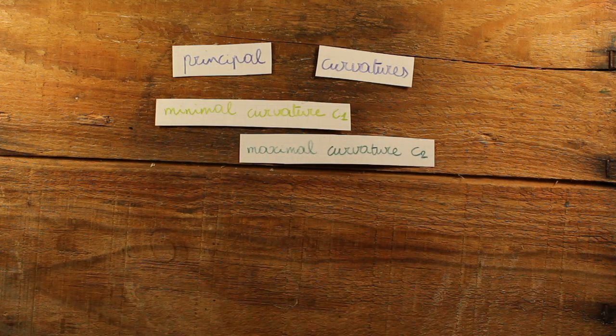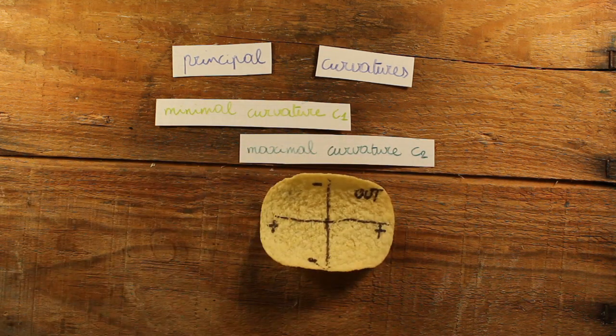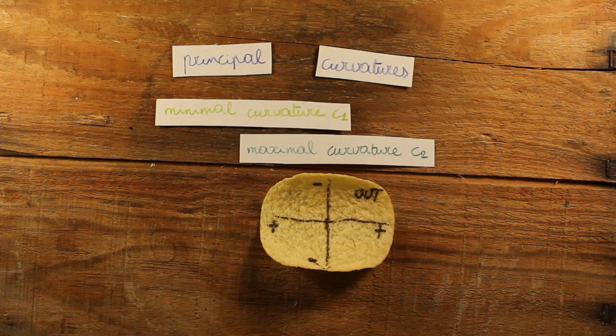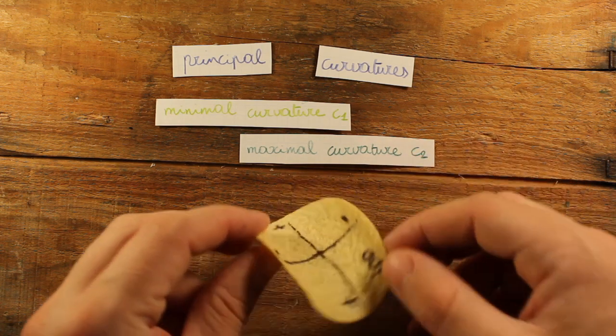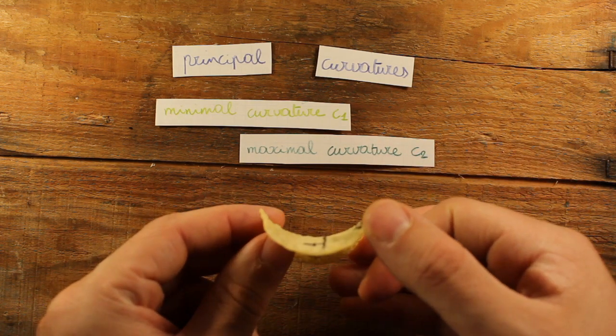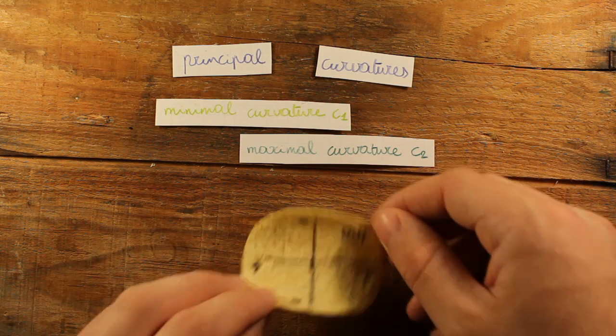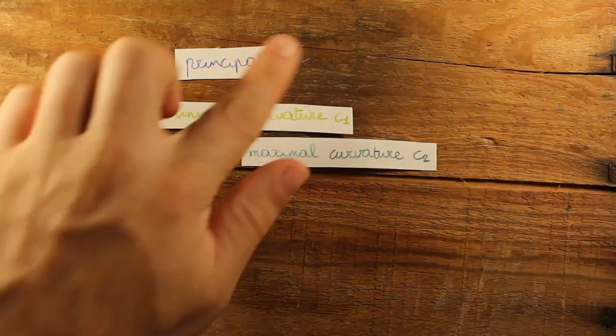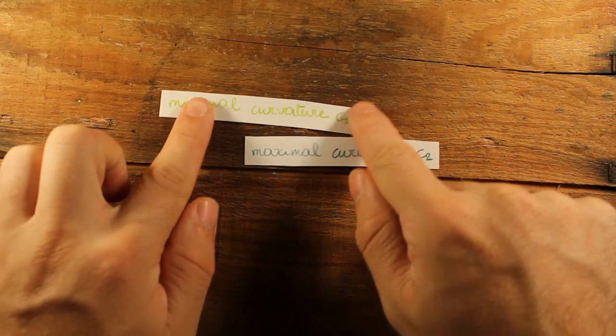I did the same for the chip. But here, the minimal curvature does not correspond to the largest osculating circle, but to the smallest circle that points upwards. Because in this case, the minimal curvature is the most negative one. Now we're left with two curvatures. How do we combine them into one number?